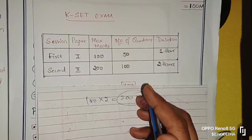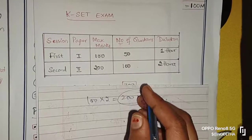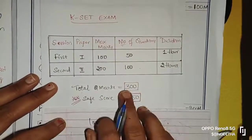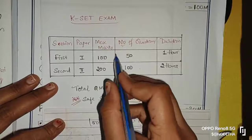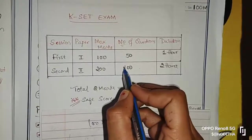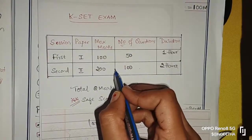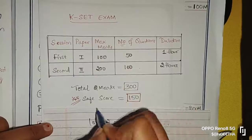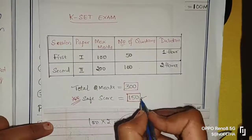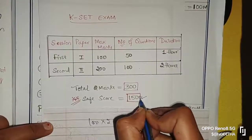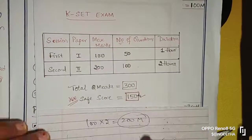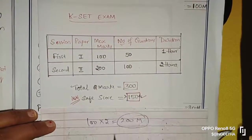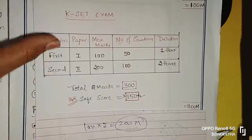For this KSET exam, total marks is 300. The general paper is 100 marks, and your subject paper is 200 marks. The safe score is 150 plus - greater than 150 will be your safe score.